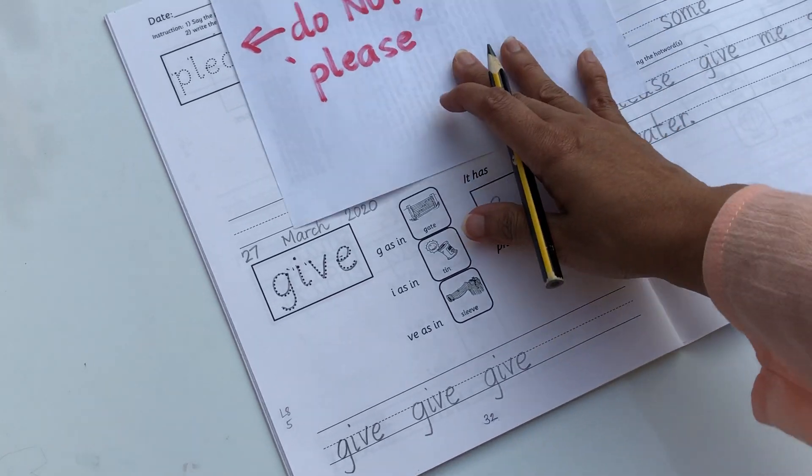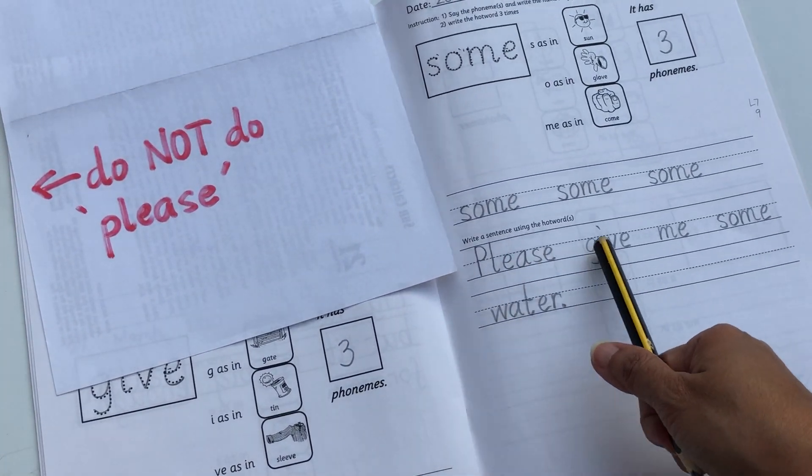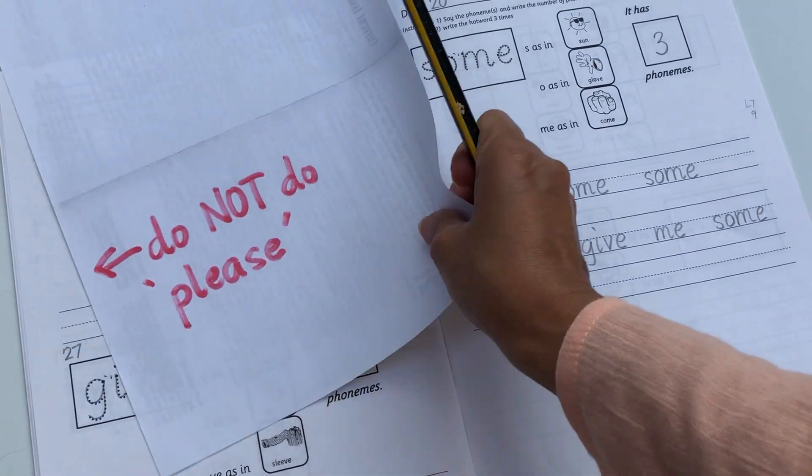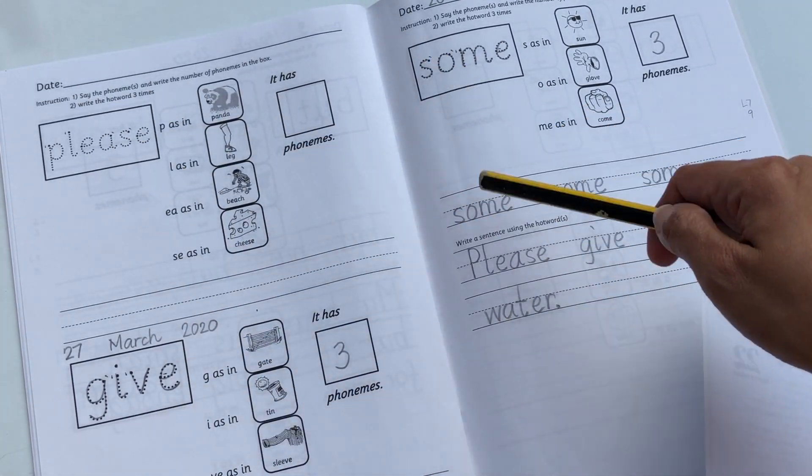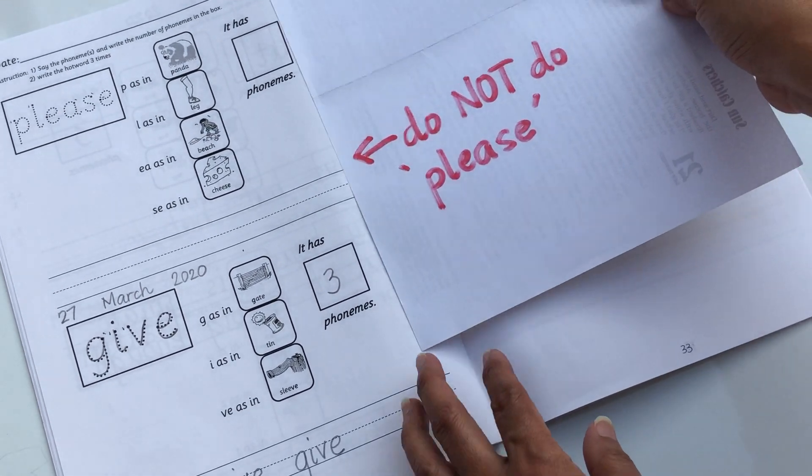Now you can use it in a sentence. We did actually here: please give me some water. We use the three hot words. Please give me some water. Please give me some candy. Please give me some cake.